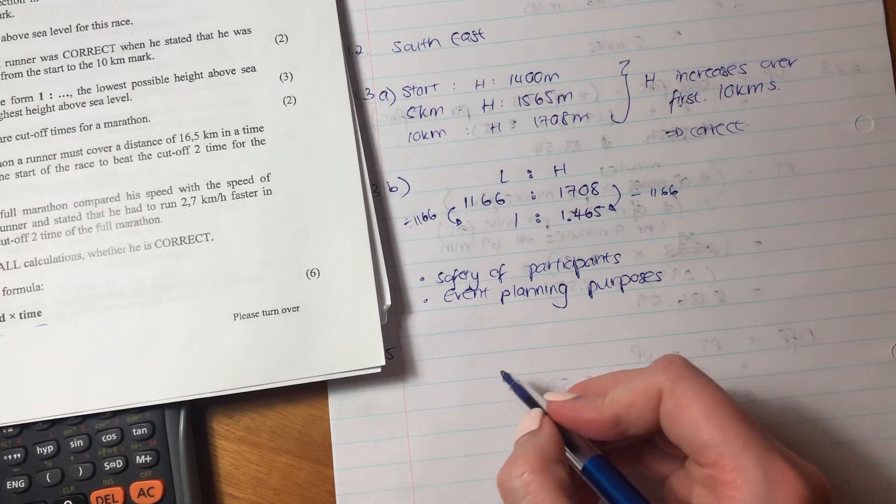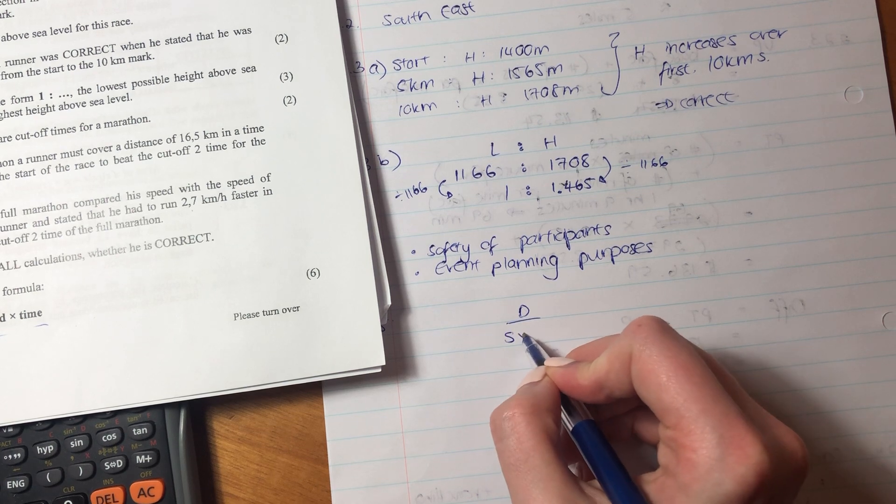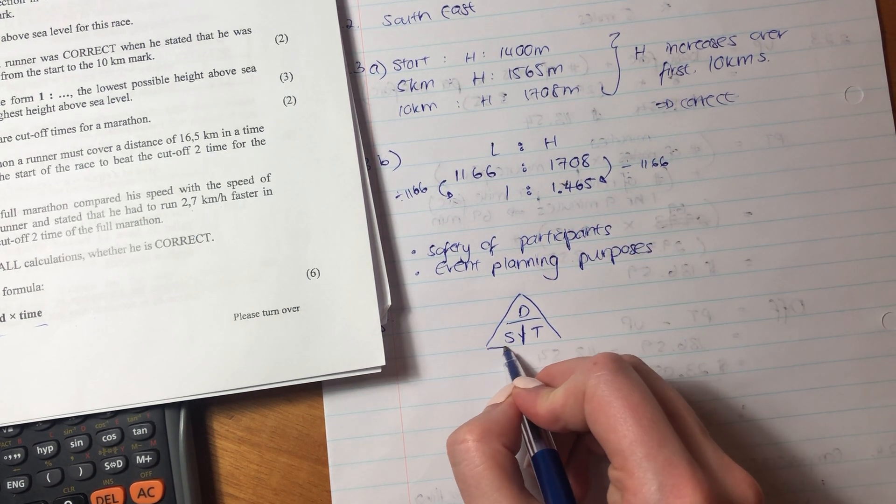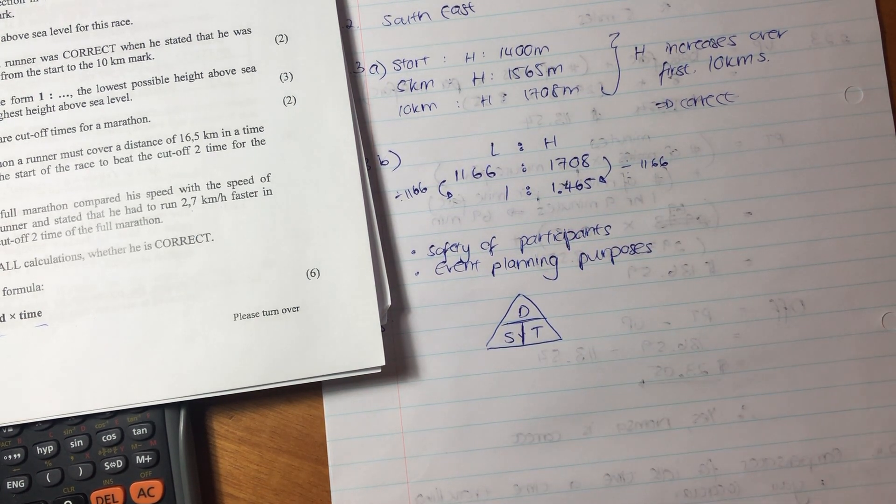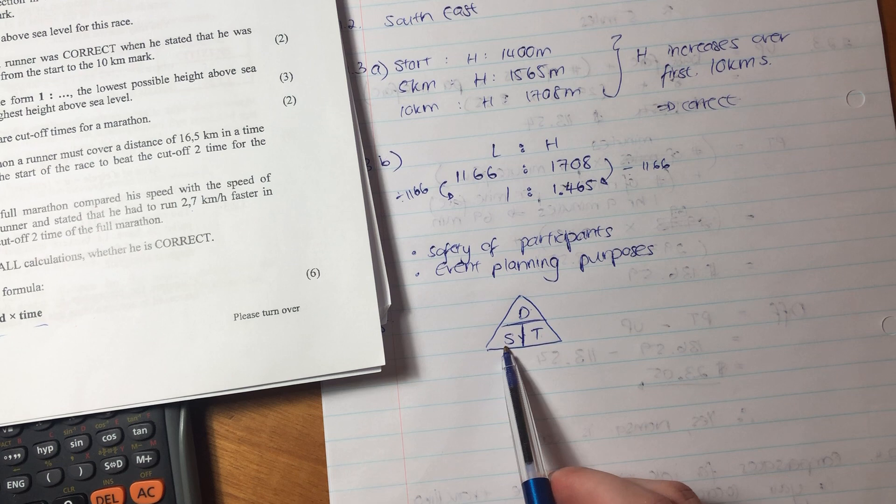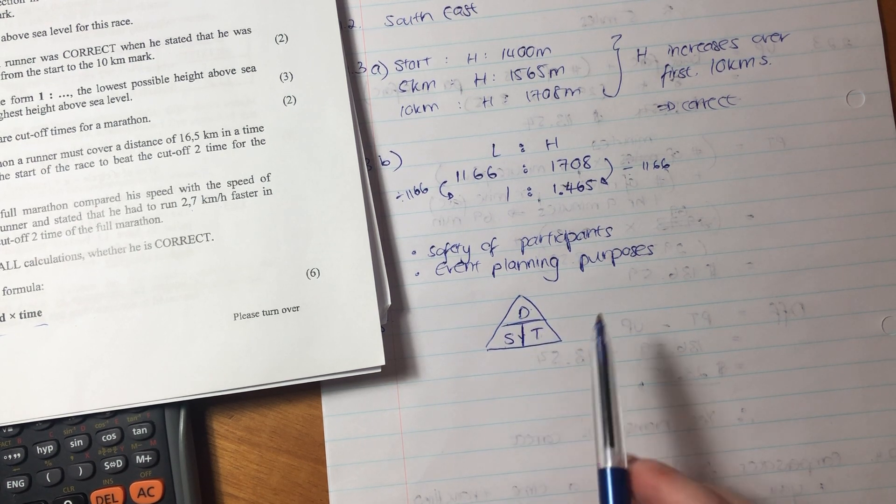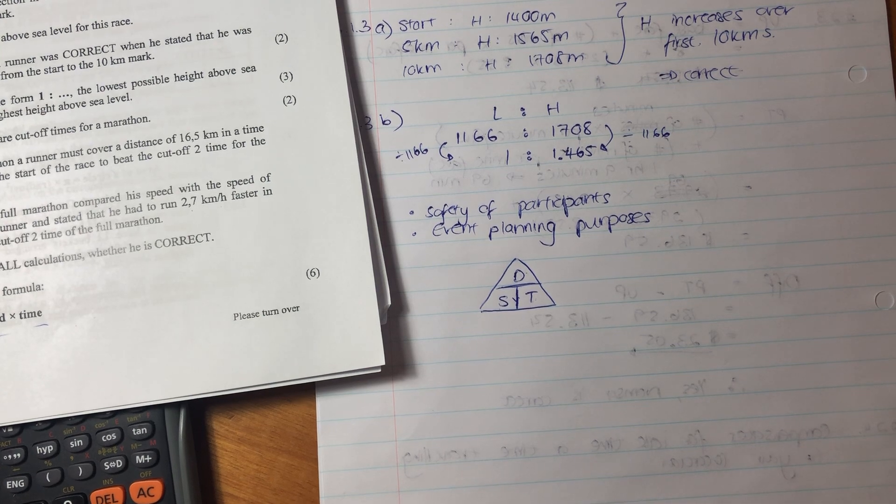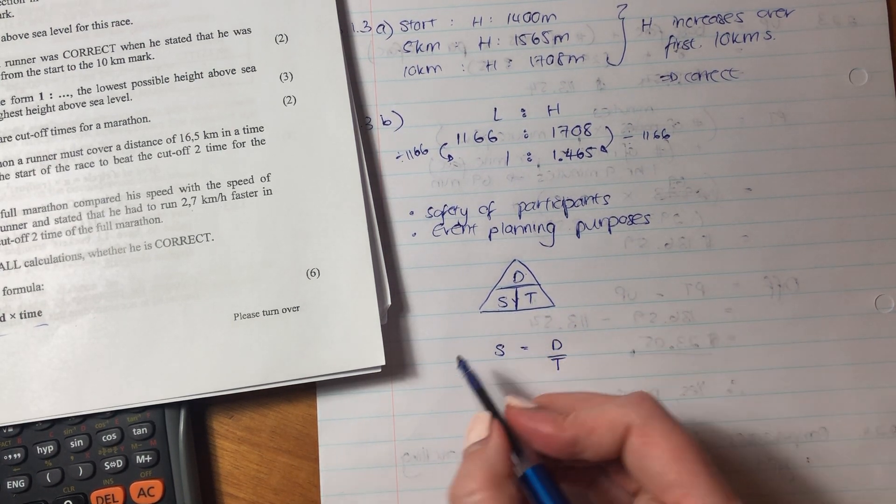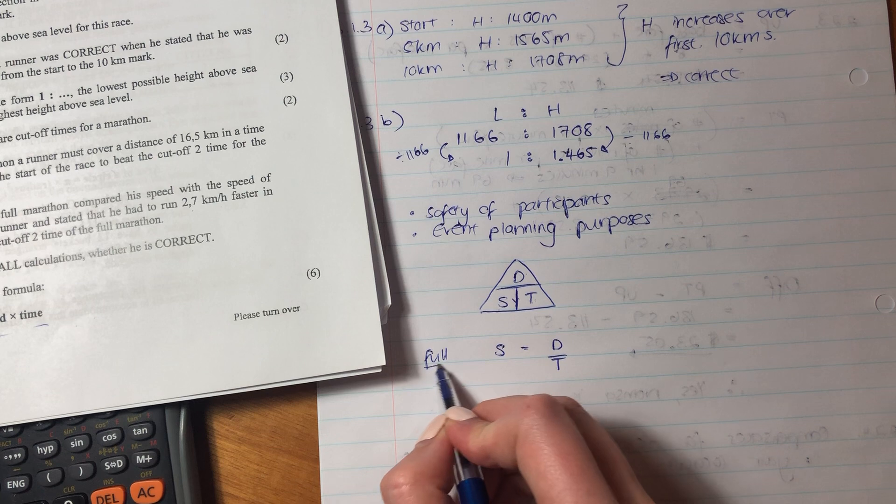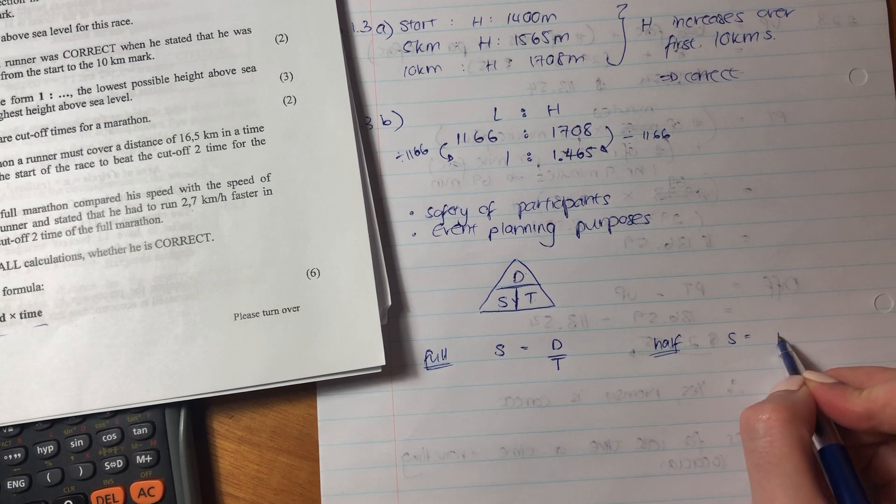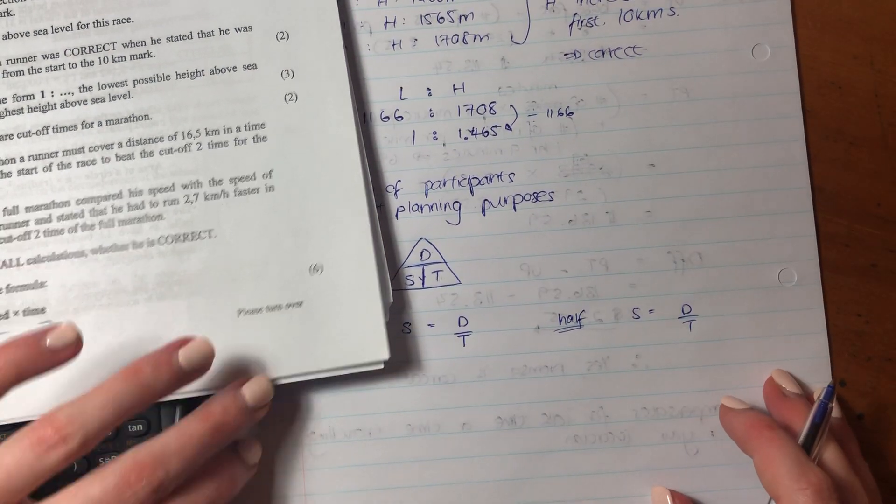Now, what we must always remember is there's this little triangle. I'm sure if you do geography, you know this. We actually use this in a lot of different subjects. It's just a little triangle. So we know that distance equals speed times time. Time equals distance over speed and speed equals distance over time. So you can use this triangle always. So what we want to know is we want to know the speed, so we actually want to know speed, which equals distance over time. And we want to know it for the full marathon and we want to know it for the half. So I'm just going to do these two calculations next to each other so that we can compare them.